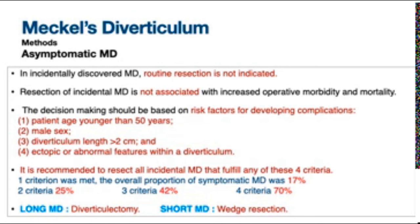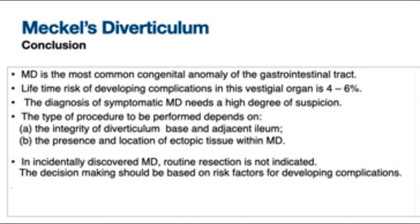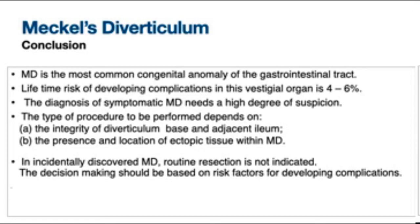The resection should be diverticulectomy for long Meckel's diverticulum or wedge resection for short Meckel's diverticulum. In summary: Meckel's diverticulum is the most common congenital anomaly of the GI tract, with a lifetime complication risk of up to 6%. Its diagnosis requires a high degree of suspicion. The procedure depends on the integrity of the diverticular base and adjacent ileum, and the presence and location of ectopic tissue. In incidentally discovered cases, resection is not routine but should be guided by risk factors.